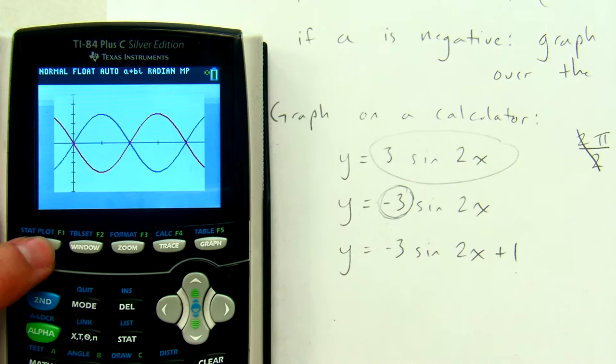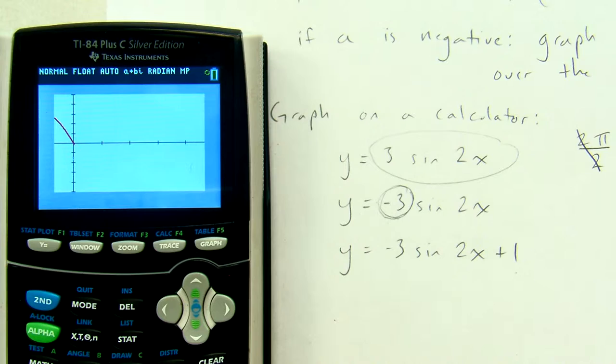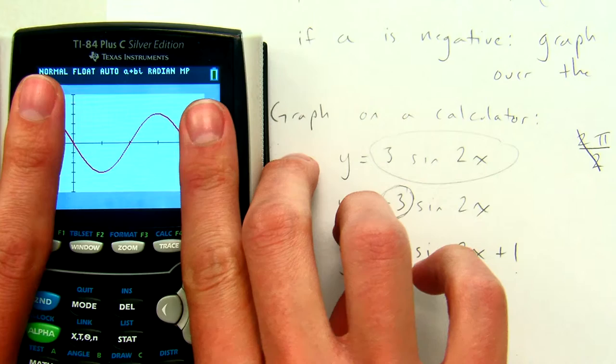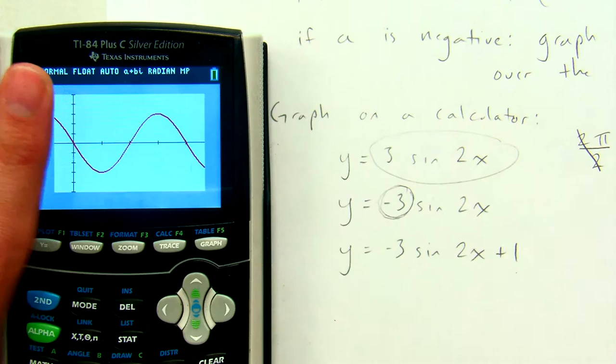Okay, I'm going to take off the blue graph so we can just look at the reflection. Here it is. This is y equals negative 3 sine of 2x. From x equals 0 to x equals pi. It's just a reflected version of the regular sine graph.